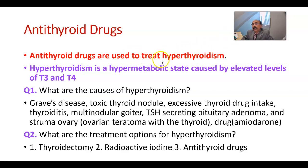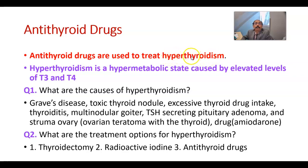The antithyroid drugs are used to treat hyperthyroidism, where there is excessive function of the thyroid gland. Hyperthyroidism is often interchanged with the terminology thyrotoxicosis. The thyroid gland secretes thyroid hormone, and when its hormone secretion is elevated, we get hyperthyroidism — a hypermetabolic state caused by elevated levels of T3 (triiodothyronine) and T4 (thyroxine).